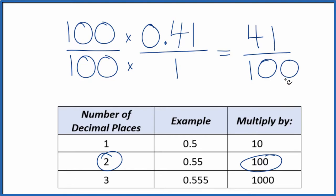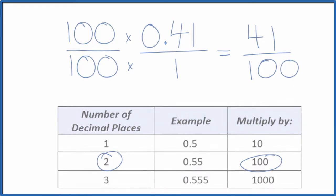If you divide 41 by 100, you'll get the decimal 0.41. This is Dr. B. Thanks for watching.